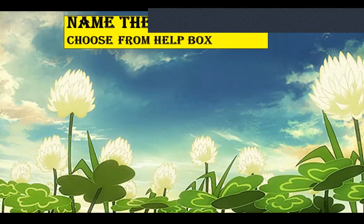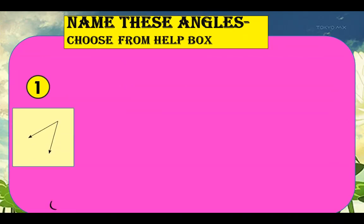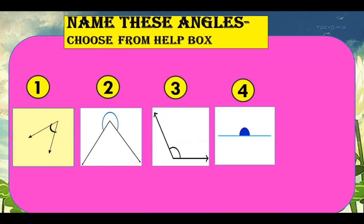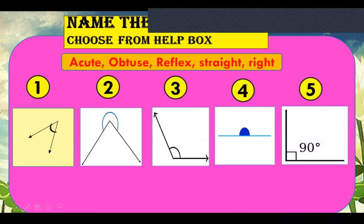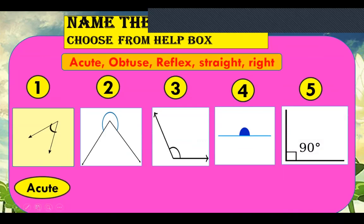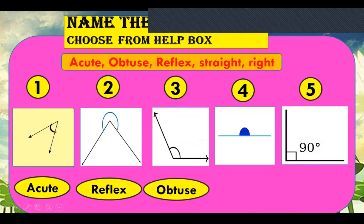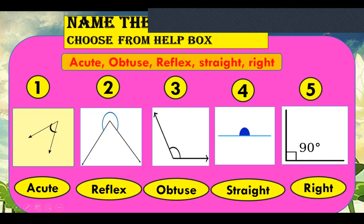Name these angles — choose from the help box. Look at these five angles and label the correct one. Let's check. First one is an acute angle. Second is a reflex angle. Third is an obtuse angle. Fourth is a straight angle. And fifth is a right angle.